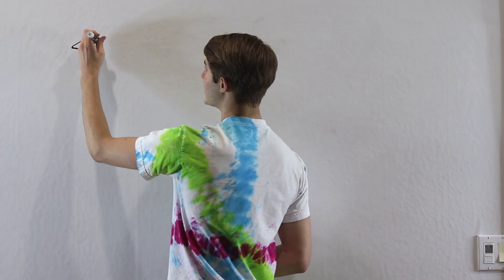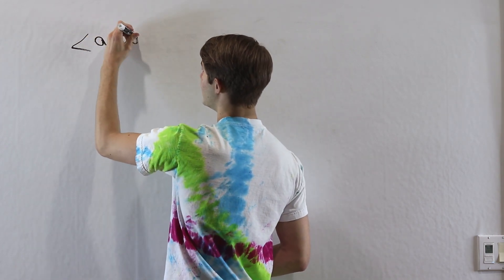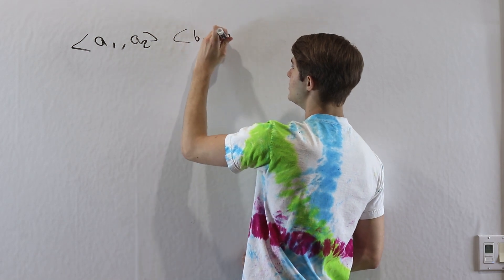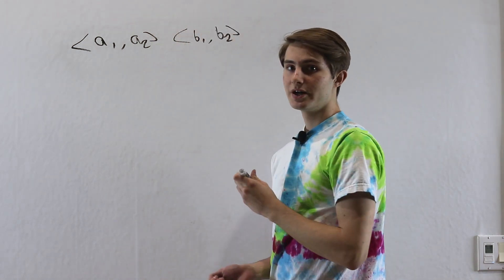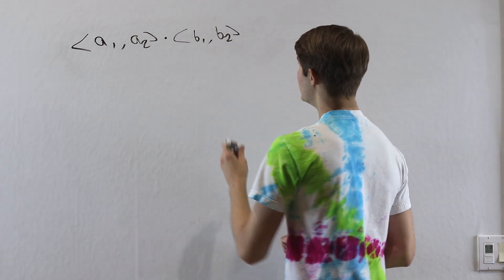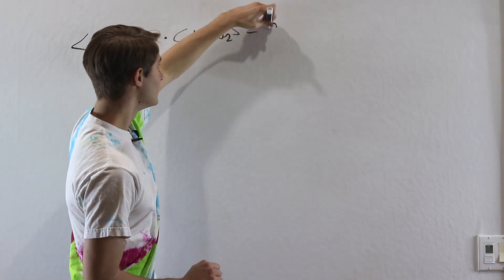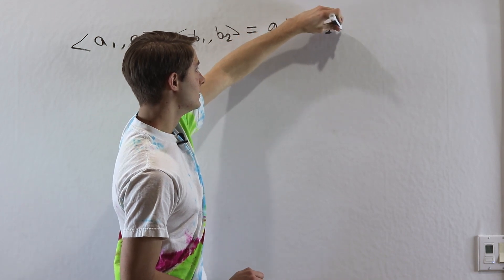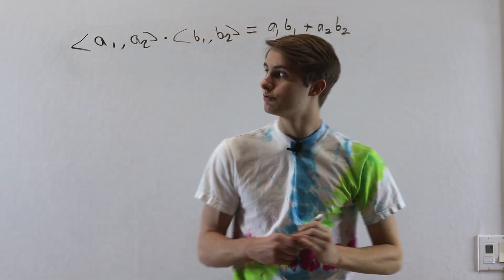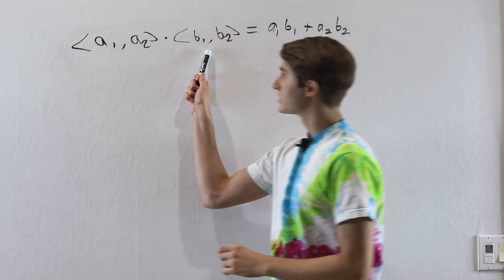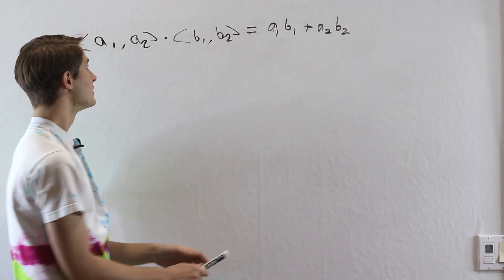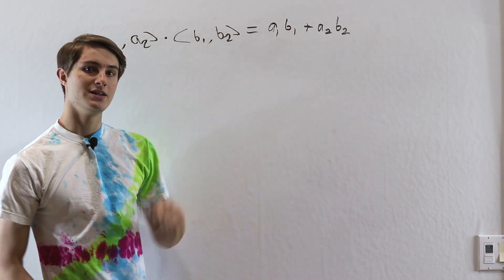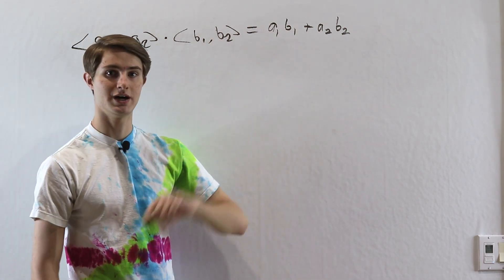If we're looking at a vector (a1, a2) and another vector (b1, b2), if we take the dot product — we'll denote that by putting a dot between them — this is going to be equal to a1·b1 plus a2·b2. We took the x components of each vector, multiplied them together, then took the y components, multiplied those together, and added them up. This is the definition of the dot product.